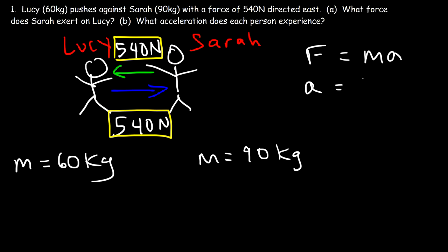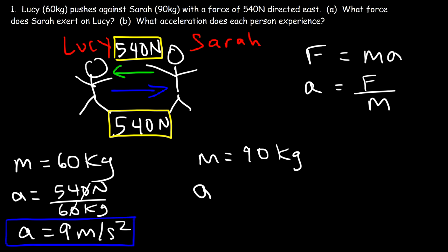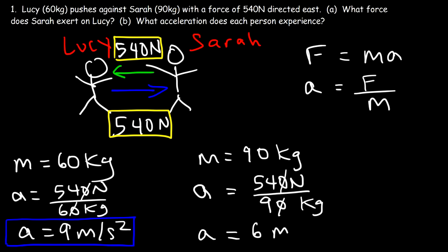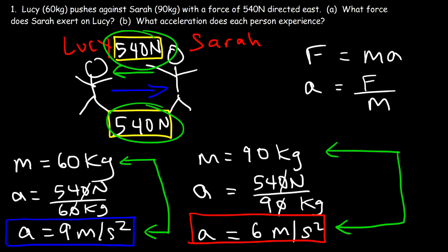For Lucy: a force of 540 Newtons divided by 60 kilograms gives 9 meters per second squared. For Sarah: she feels the same force of 540 Newtons but her mass is 90 kilograms — 540 divided by 90 equals 6 meters per second squared. The person with greater mass experiences a lower acceleration, and the lighter person experiences a larger acceleration, but the force exerted on both individuals is the same according to Newton's third law.